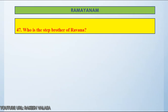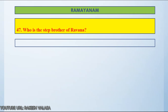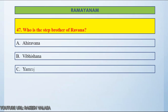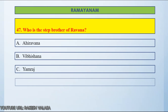Question number 47: Who is the step brother of Ravana? Option A, Ahiravana. Option B, Vibhishana. Option C, Yamaraj. Option D, Kuber. Let us count and start.